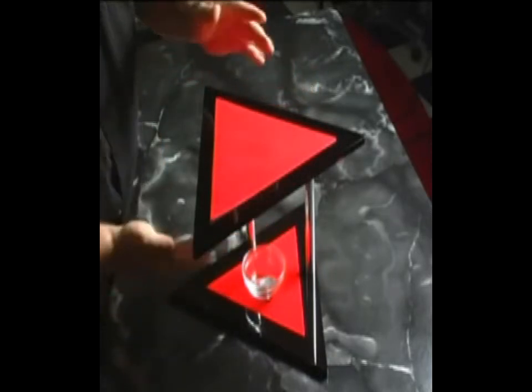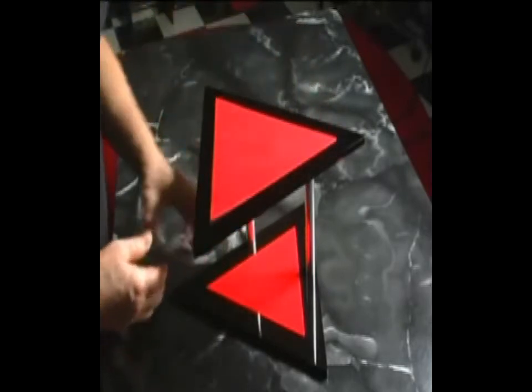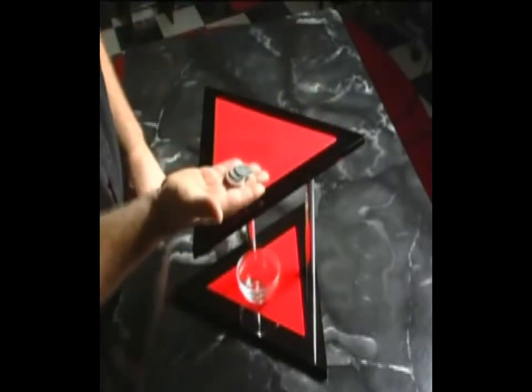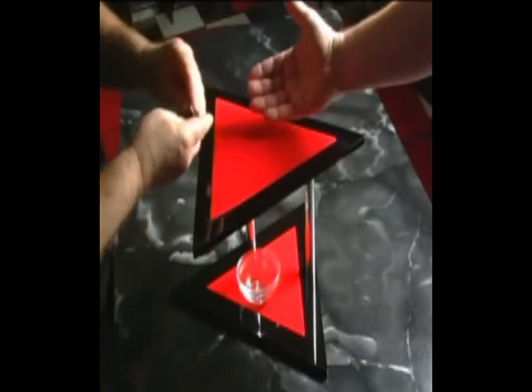Now if you notice, the triangle has three points, and in this illustration I'm going to use three coins. So if you'll help me, sir, just put your hand out for a moment. I'm going to hand you these three coins.